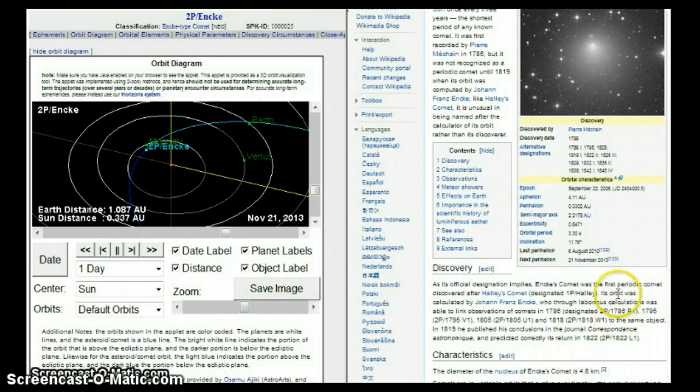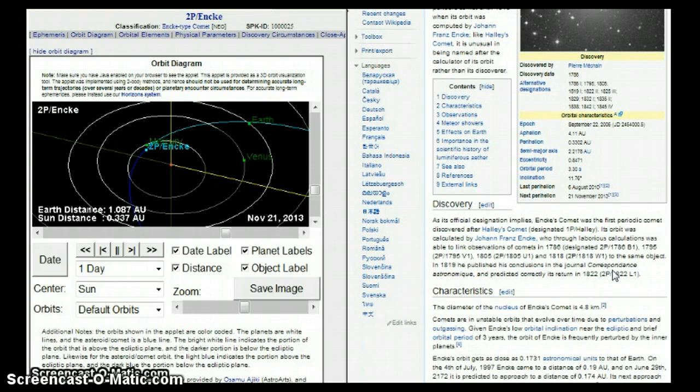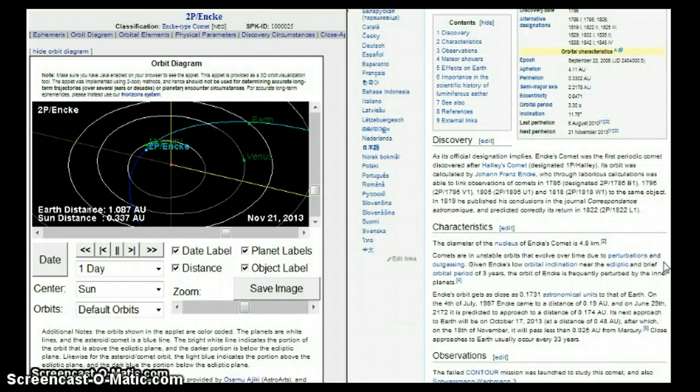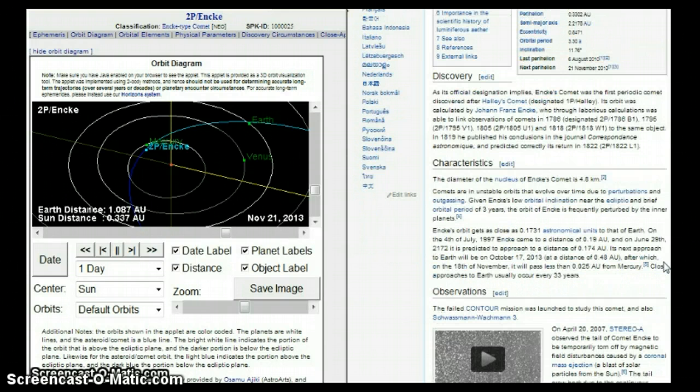The last perihelion was back in 2010, August 6th. The next one coming up November 21st, 2013. Many months ago they thought it looked like it might happen on the 25th, but it's going to be the 21st. I'm not going to read all this stuff to you. I will post links you can go check it out for yourself. It's got many other names throughout all this long time that it's been discovered. The diameter of the nucleus is 4.8 kilometers.